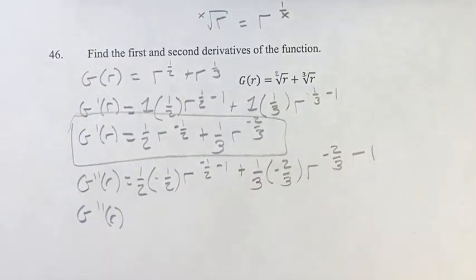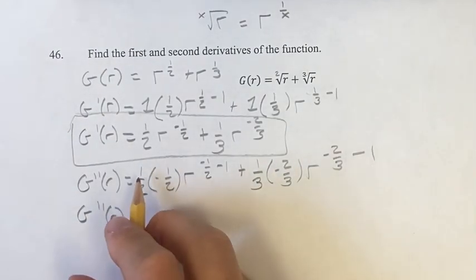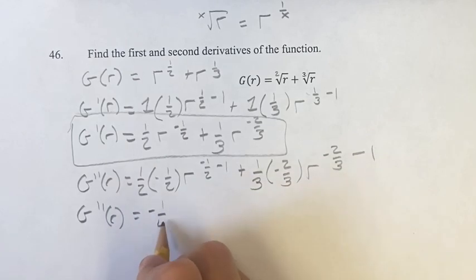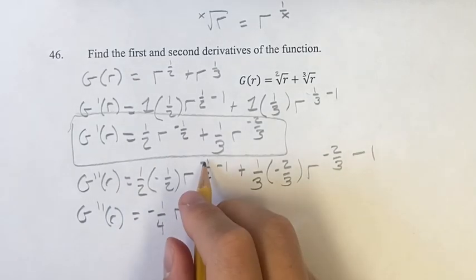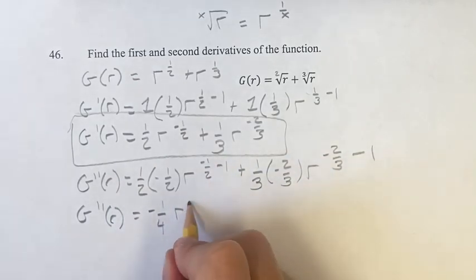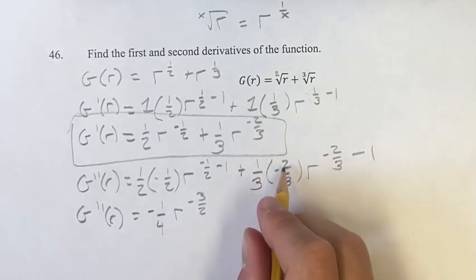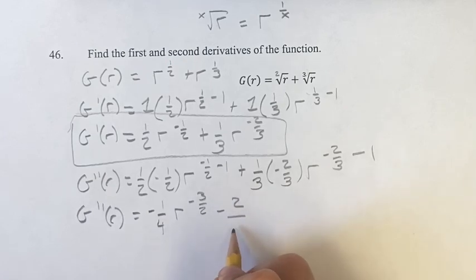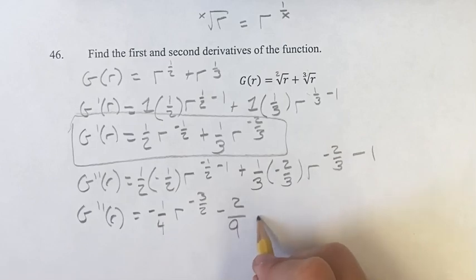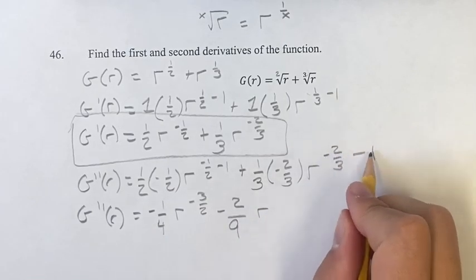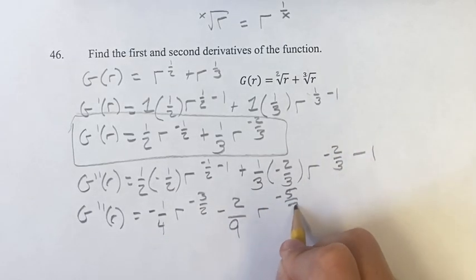Now, our simplified second derivative is 1 half times negative 1 half, which is negative 1 fourth, r to the negative 1 half minus 1, which is negative 3 halves, plus 1 third times negative 2 thirds is negative 2 ninths, multiplying those two right there, times r to the negative 2 thirds minus 1 is negative 5 thirds.